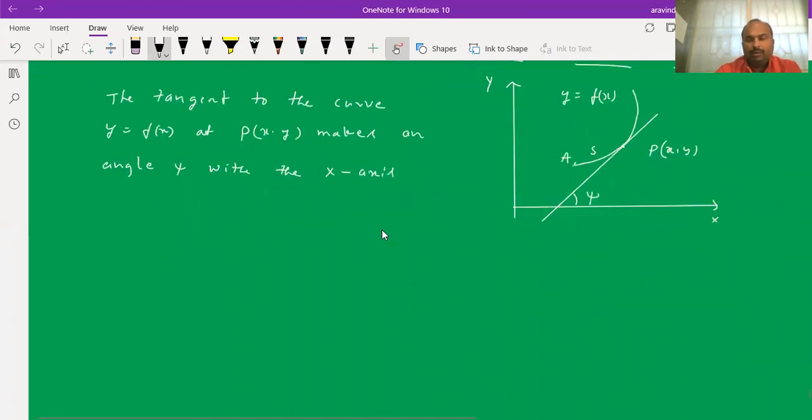We know that if any line makes an angle with the x axis, we will take the slope of the line as tan psi. Therefore, slope of the tangent is tan psi.